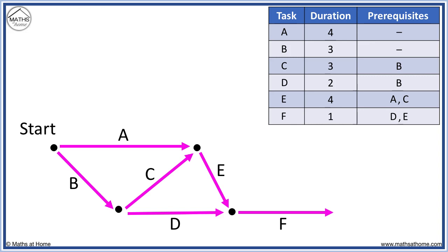Now there are no more tasks to complete so we mark the finish after our final task F. The network is now complete. If we need to find the minimum completion time, we mark the times to complete each task. The minimum completion time is found as the longest route from start to finish.